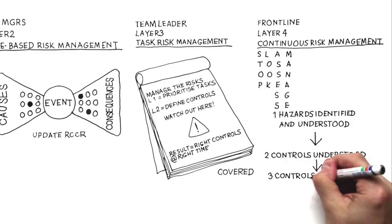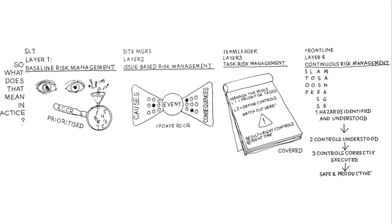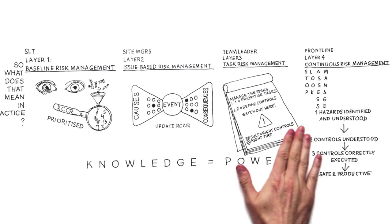Operational risk management is dynamic. Information is continually updated as situations change and we learn from incidents. Knowledge is power.